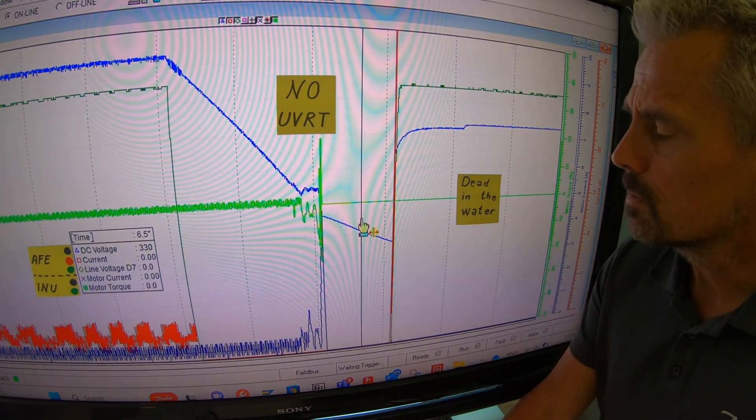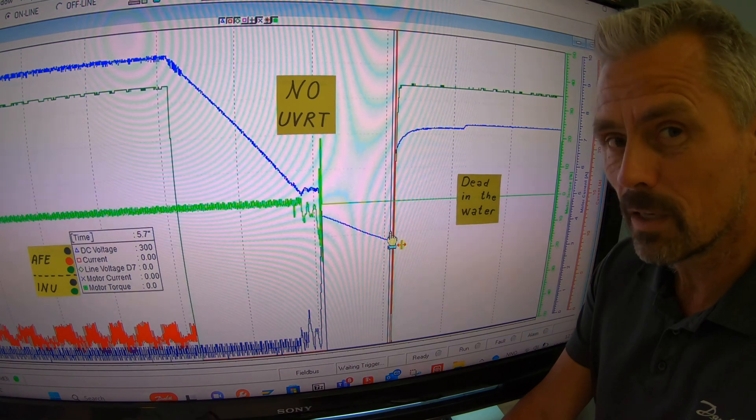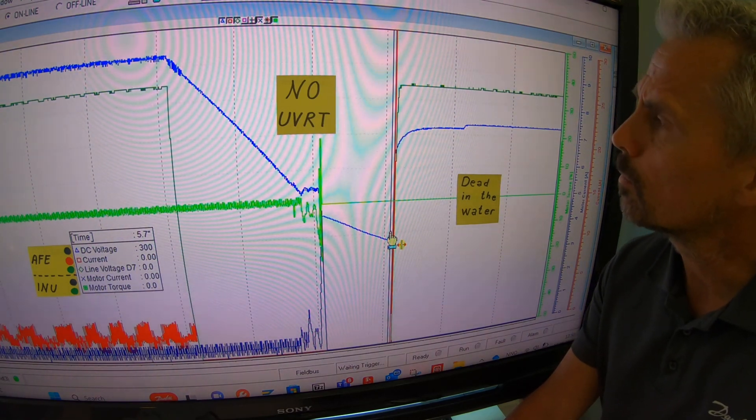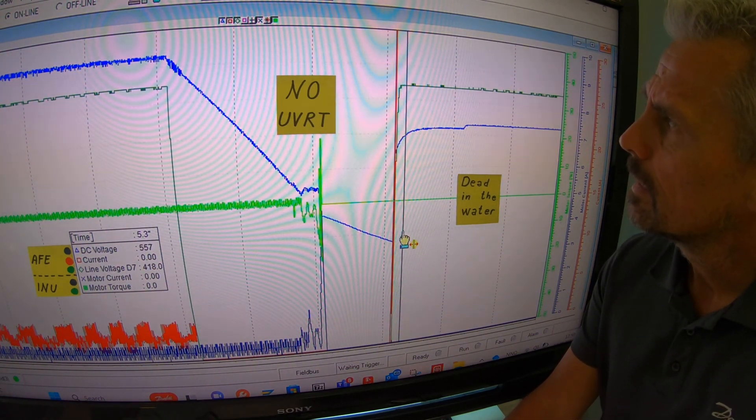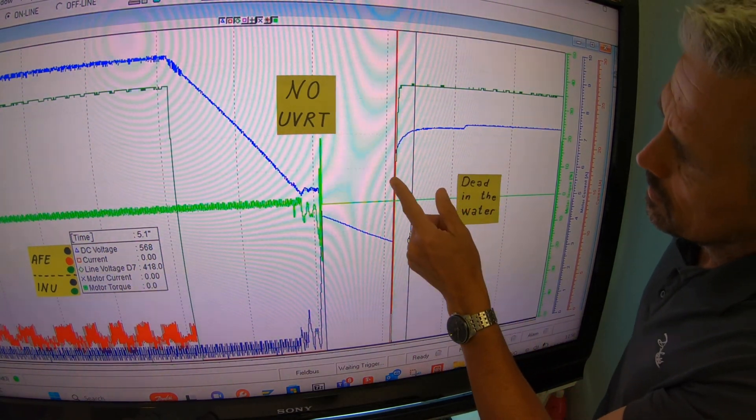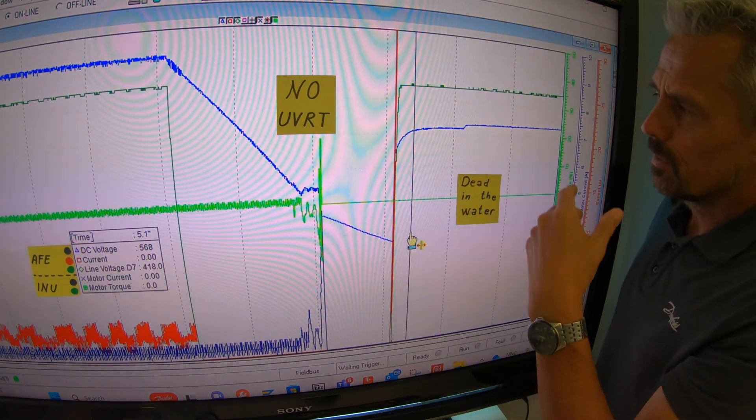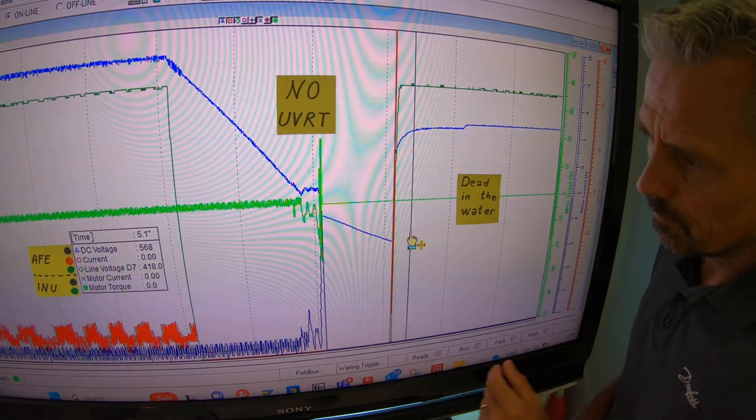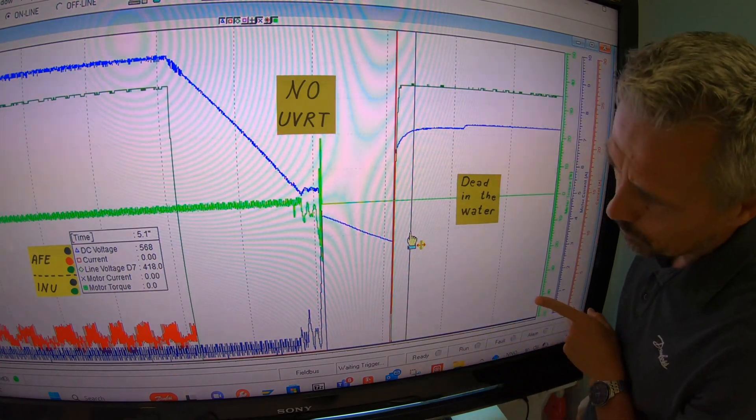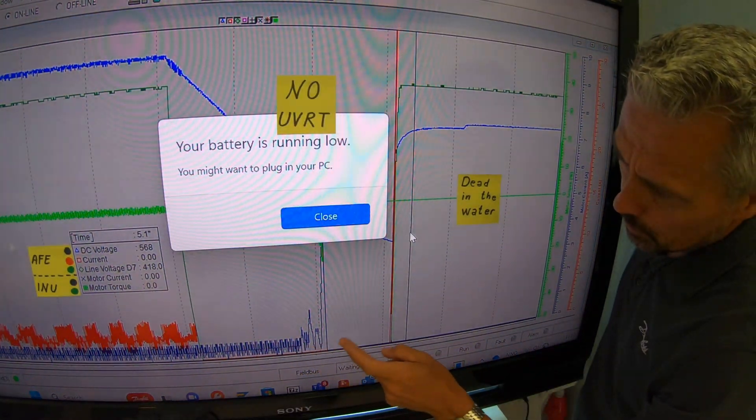So the DC voltage keeps on plummeting down to 300 volts and you probably have an undervoltage trip on most of the drives. Here, the AC voltage is restored. The DC voltage comes back from the pre-charge circuits and also the freewheeling diodes. But there is no start-up of the active frontend. The active frontend doesn't start. The consumer doesn't start.